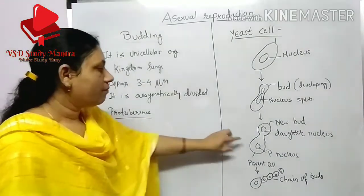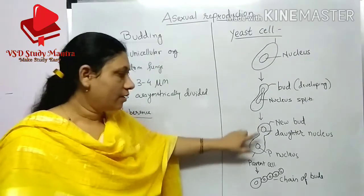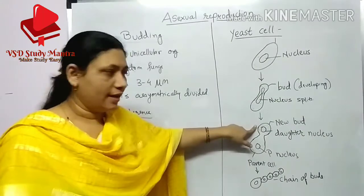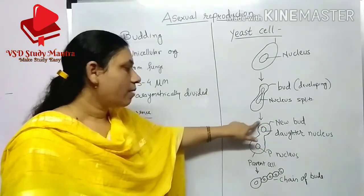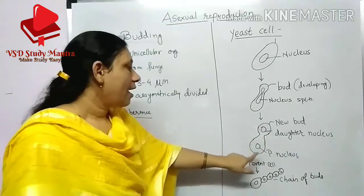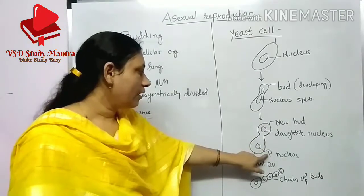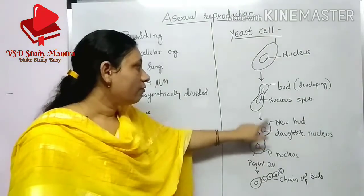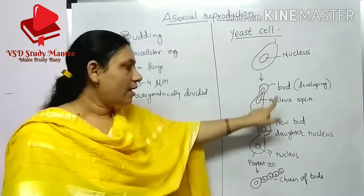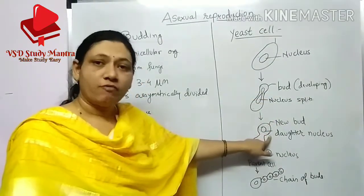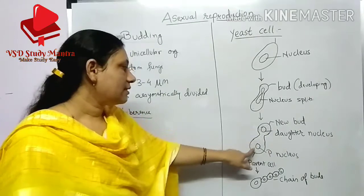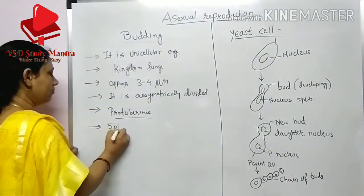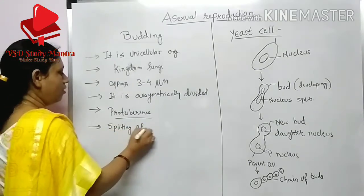Afterwards, the nucleus splits. This is the parent nucleus and this is the daughter nucleus. Here you can see a new bud forming. In the next stage, the bud has developed further. You can clearly see the splitting of the nucleus.